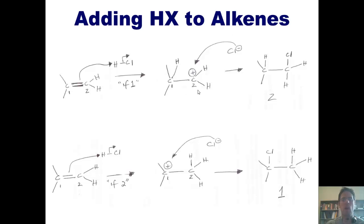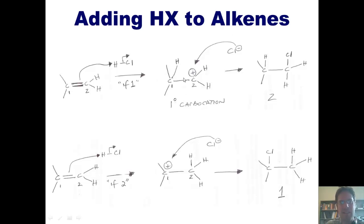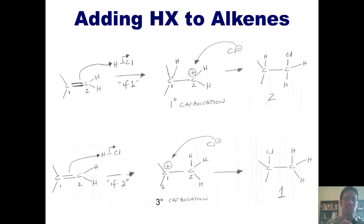As I mentioned earlier, only product-1 forms and product-2 does not. Why? Because carbon-2 in the first pathway is a primary carbocation — a positively charged carbon that is only bonded to one carbon. In contrast, carbon-1 in the second pathway is a tertiary carbocation — bonded to one, two, three carbons. Because it is a tertiary carbocation, it is much more stable than a primary carbocation. Hence, this reaction proceeds through the tertiary carbocation to form product-1, and not through the extremely unstable primary carbocation to form product-2.